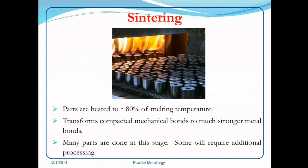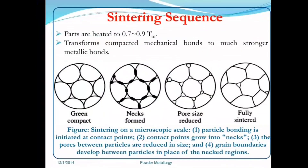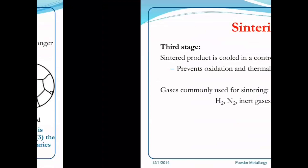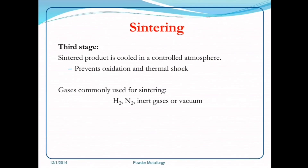The sintering sequence: parts are heated to 0.7 to 0.9 Tm, which transforms compacted mechanical bonds to stronger metallic bonds. The green compact stage shows necks are formed, pore size is reduced, and the part is fully sintered. The sintered product is then cooled in a controlled temperature environment to prevent oxidation and thermal shock.